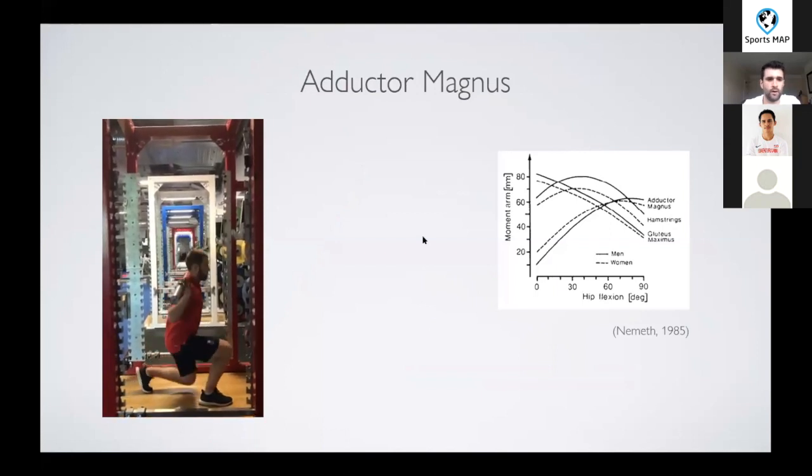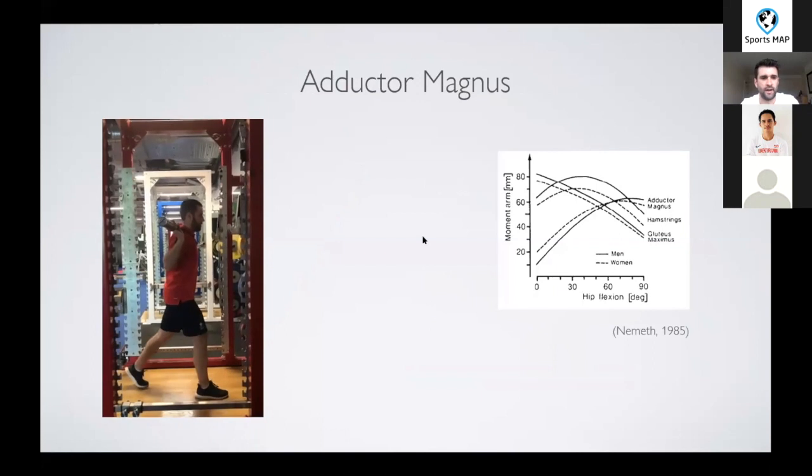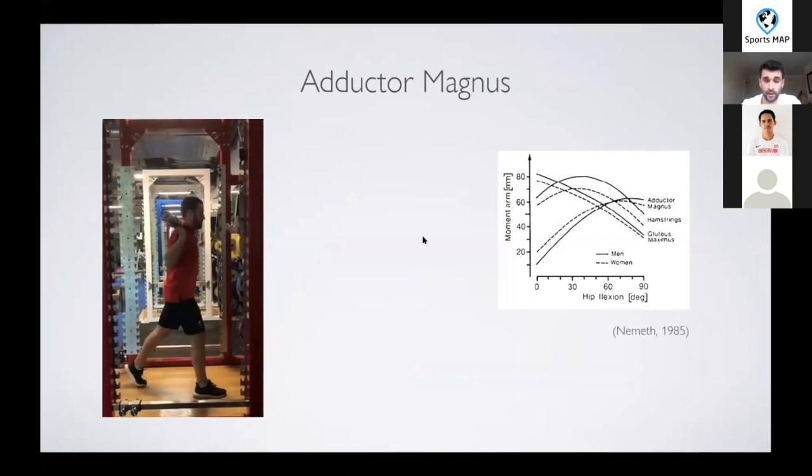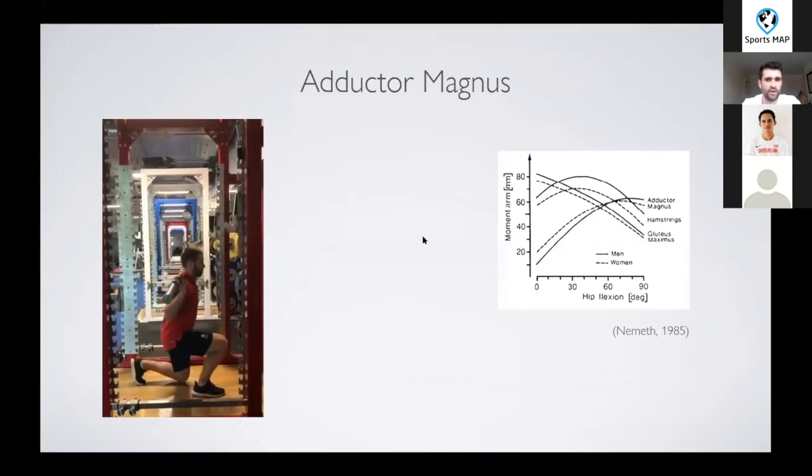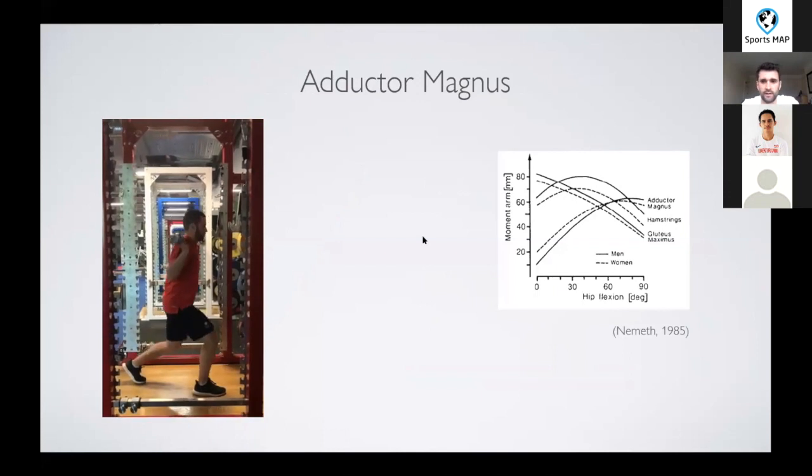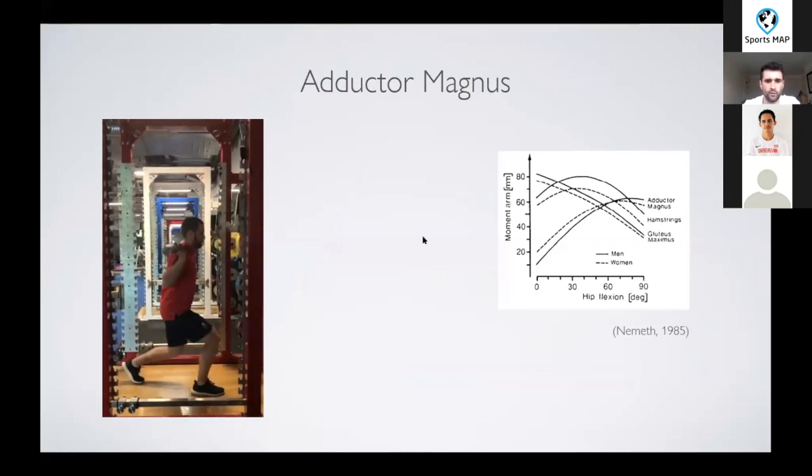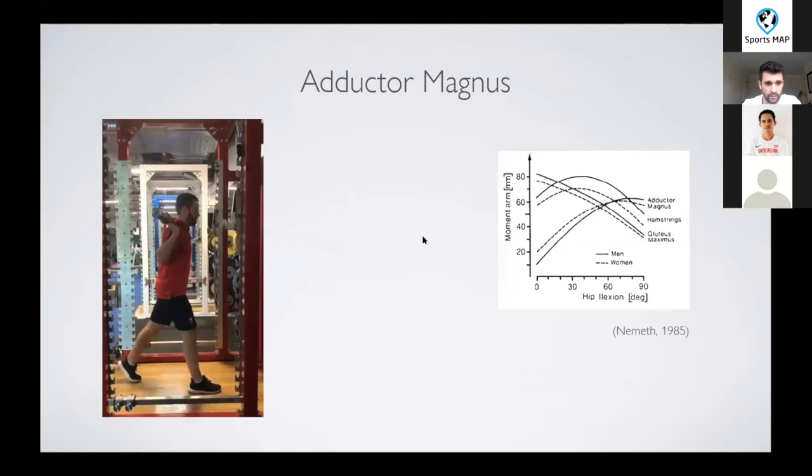If we look at this example of a split squat, and if we're trying to target a muscle like adductor magnus, you can see that the load is shared fairly evenly across the ankle, knee and hip. And then if we look on the right here, we can see that the internal moments actually vary throughout range of motion. So the adductor magnus moment arm is only really high in that deep flexion period.